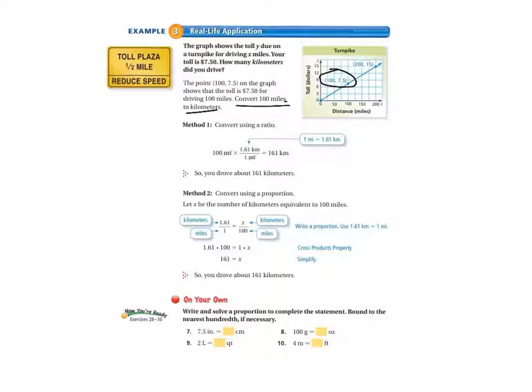Your job is to convert 100 miles to kilometers. So we're going to do two methods here. The first method is we're going to convert using a ratio. We've got 100 miles times 1.61 kilometers. We got that conversion factor from the back of our book. It's 1.61 kilometers over 1 mile. We can cross-cancel the miles just like we cross-cancel numbers. Then we've got 100 times 1.61 equals 161 kilometers. So you drove about 161 kilometers.